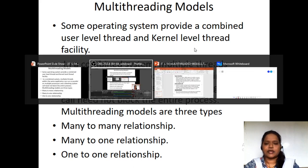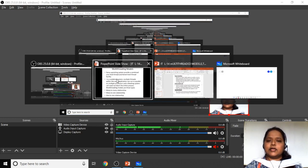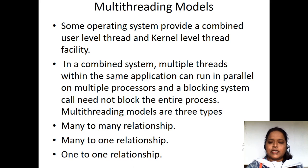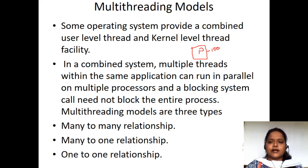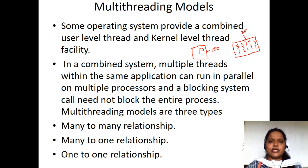For example, if you take any process — suppose this is a process P — this process is going to have a hundred number of instructions. In order to execute this process, it will take much amount of time. So what we have done is, in this hundred instructions, we have divided into four threads, so each thread is going to have 25 instructions. That way we are going to reduce the complexity of the program.